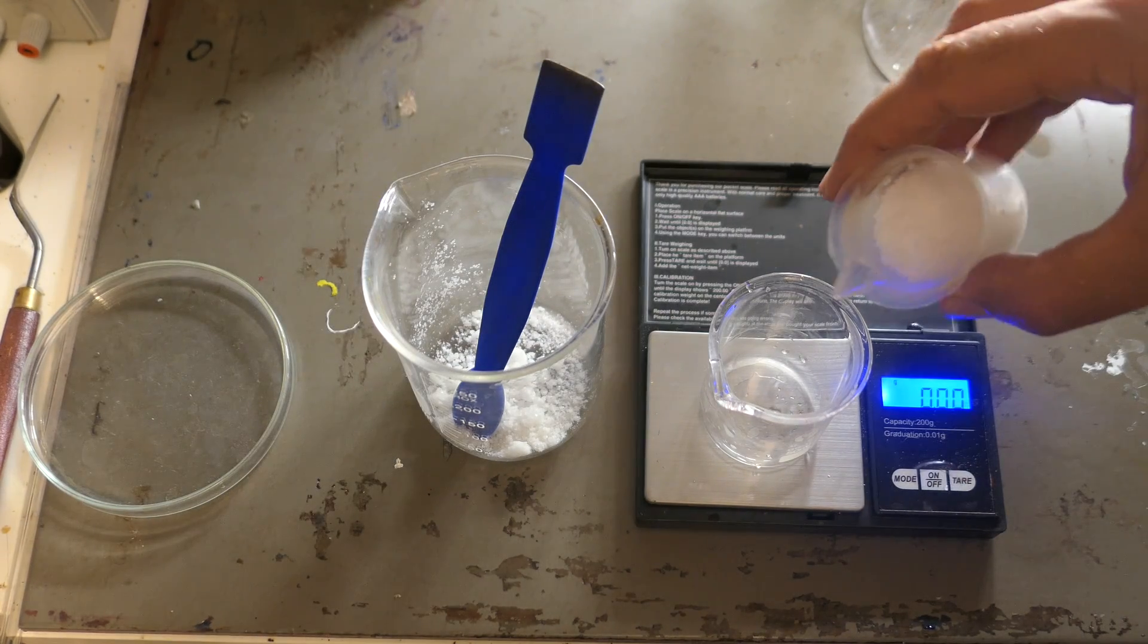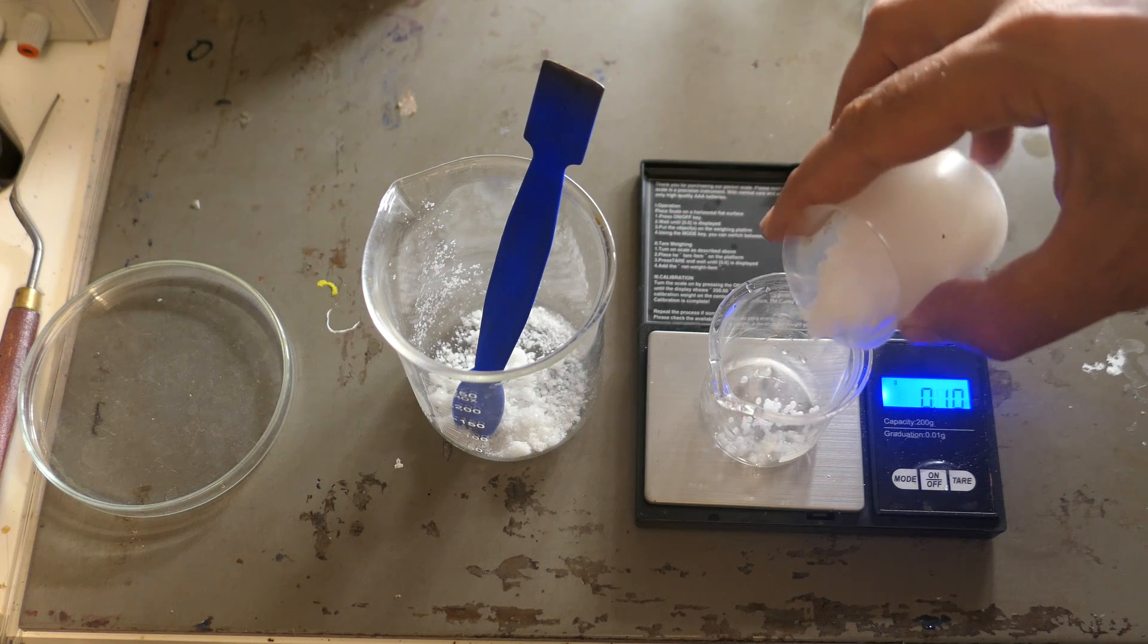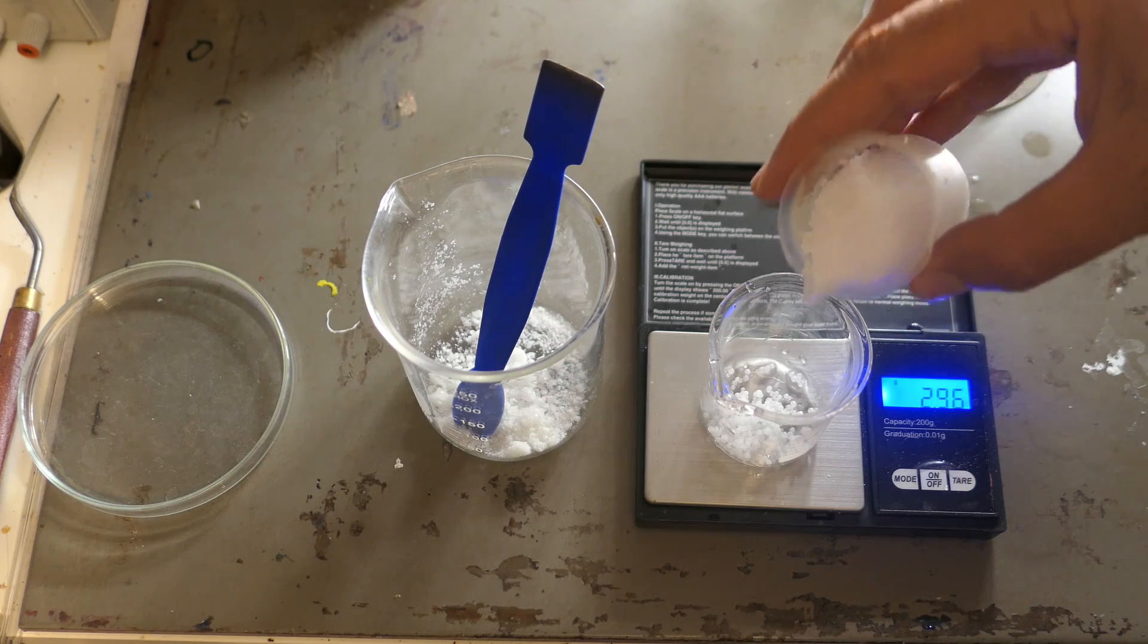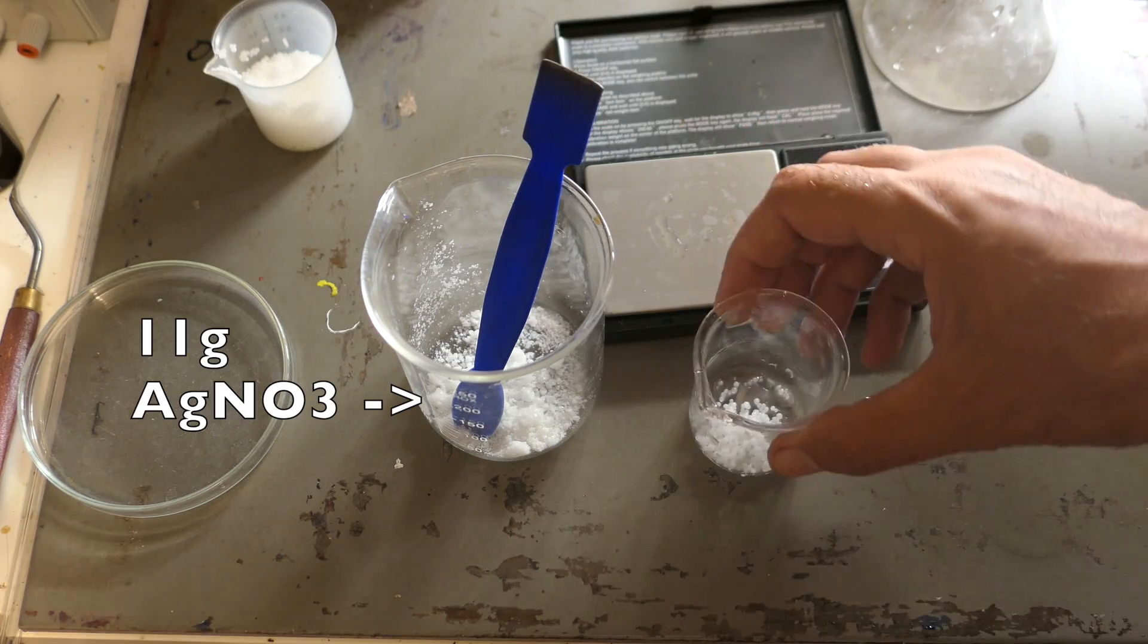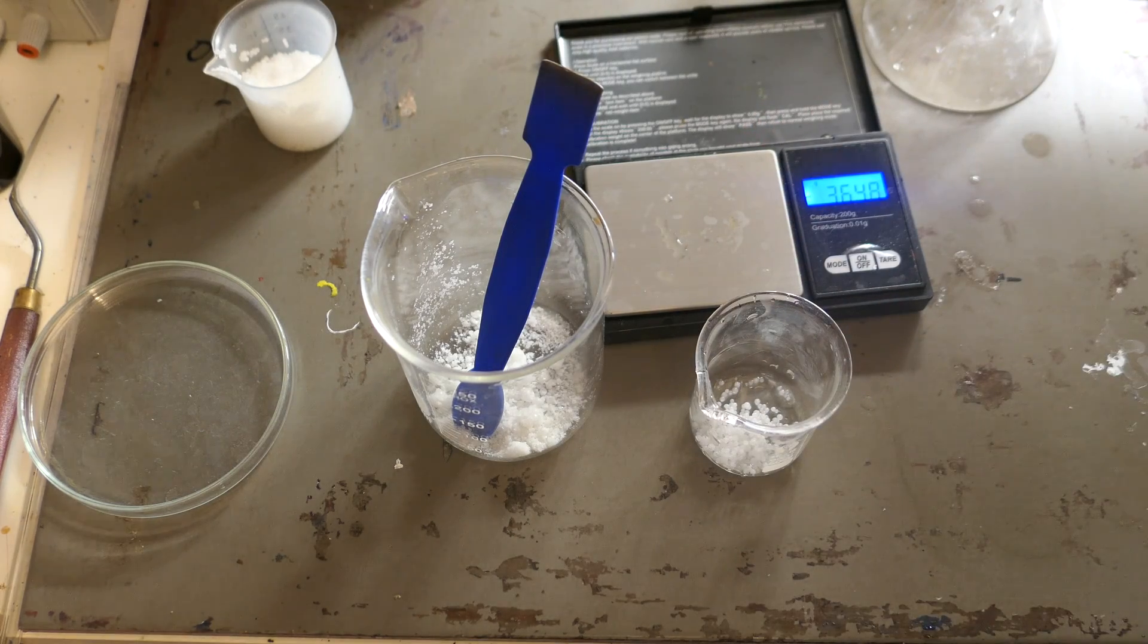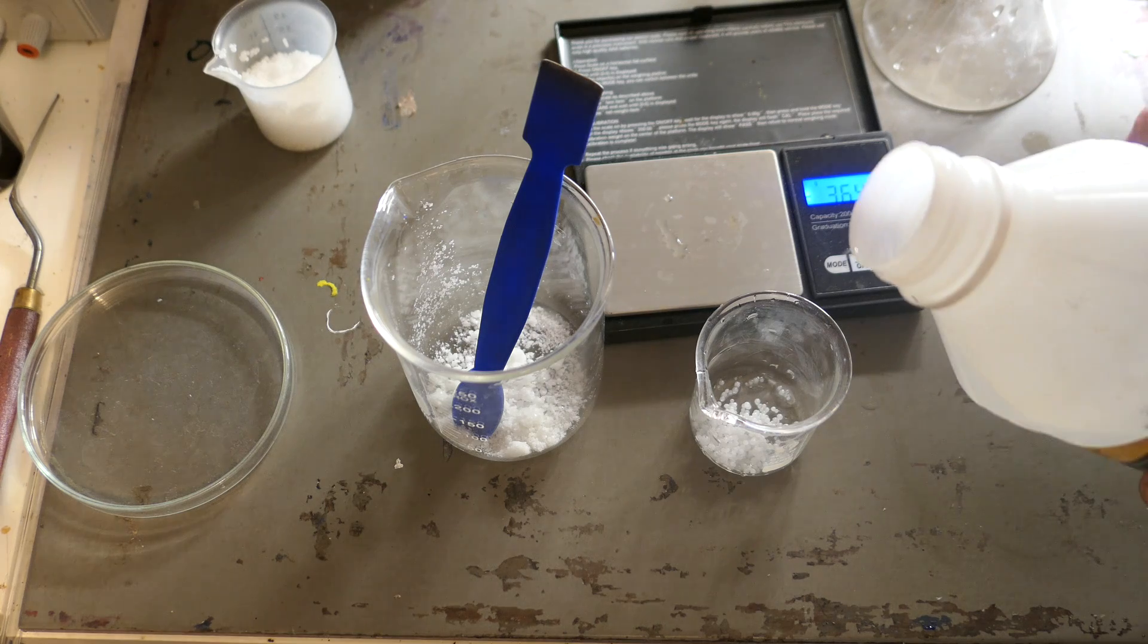First we'll make silver oxide, which will then convert into silver sulfonate. Weigh out around 11 grams of silver nitrate and place it in a beaker. You can dissolve it in distilled water, but here we just have the crystals.